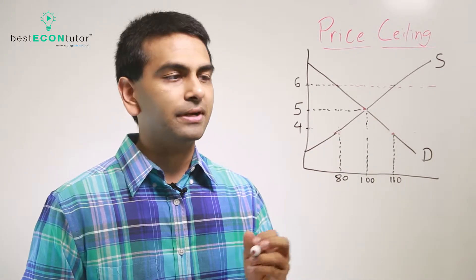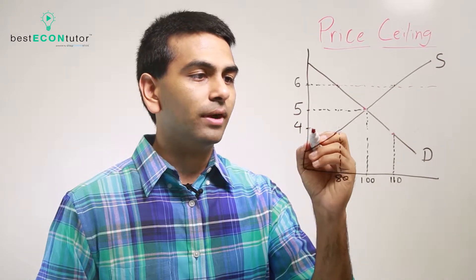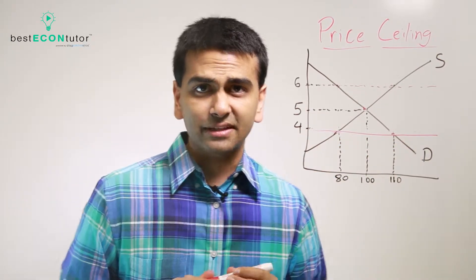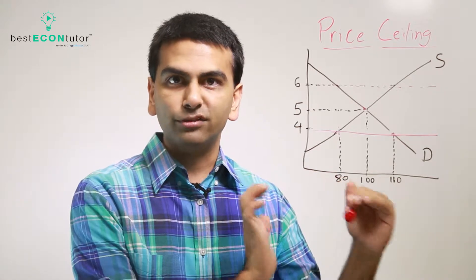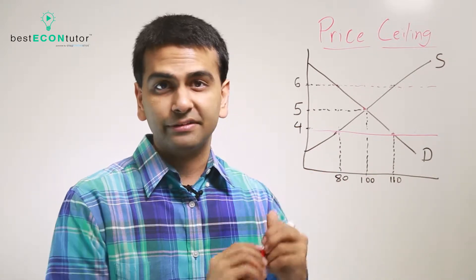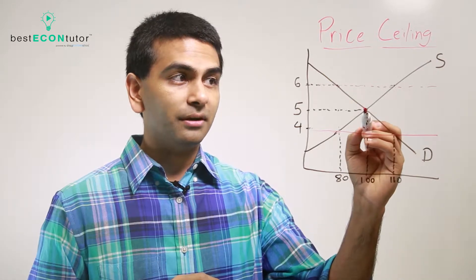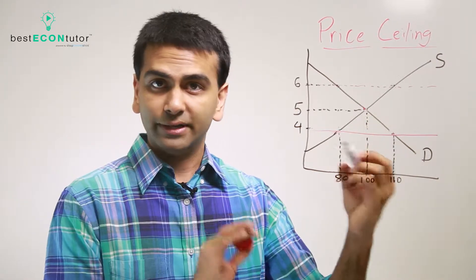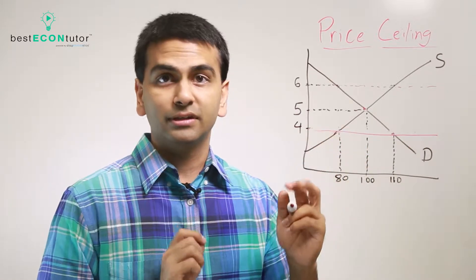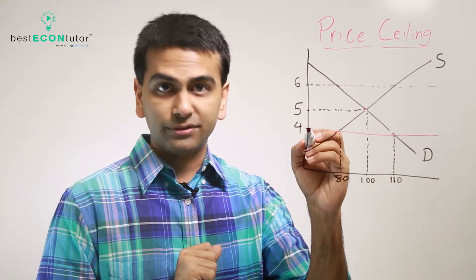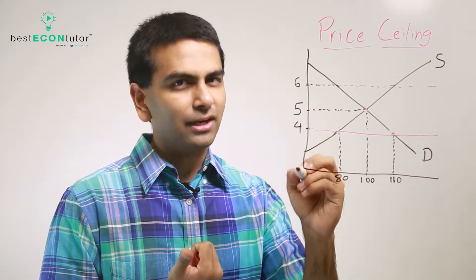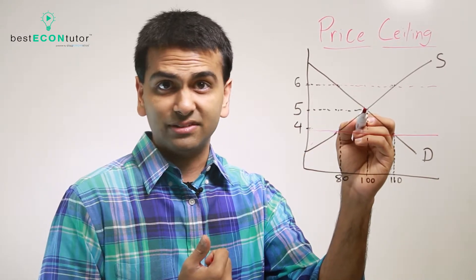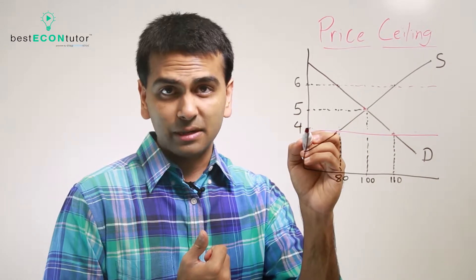But what if the ceiling was $4? That means $4 is the highest price you're allowed to charge — not even a penny higher. Our current price is $5, so that's now illegal. We'd have to lower the price down to $4. The market would set the price as close to $5 as legally possible, so the price goes to $4.